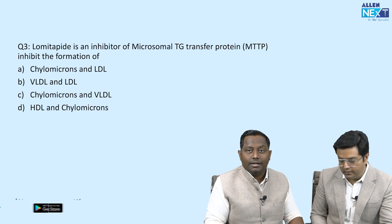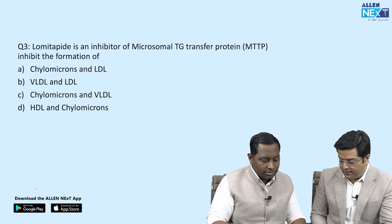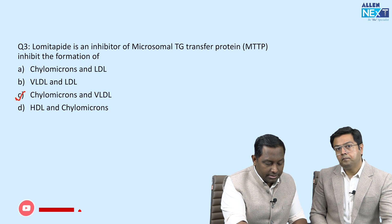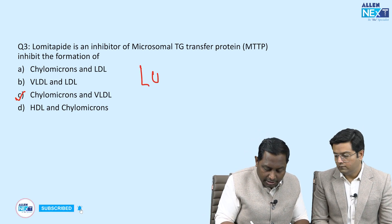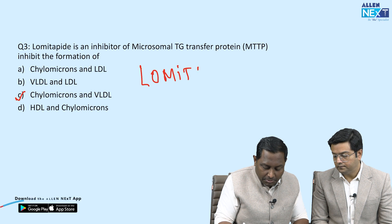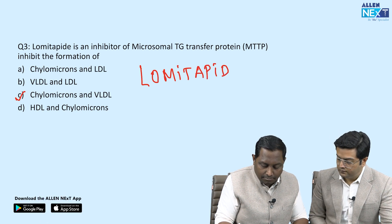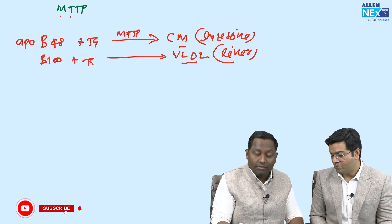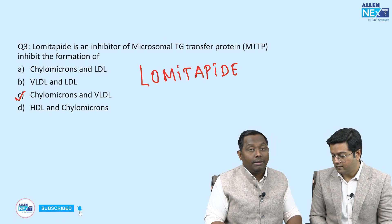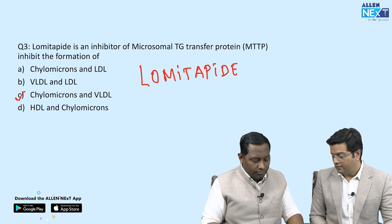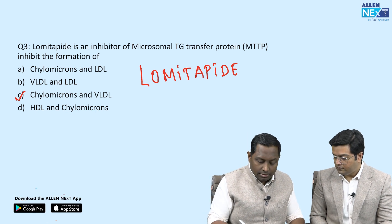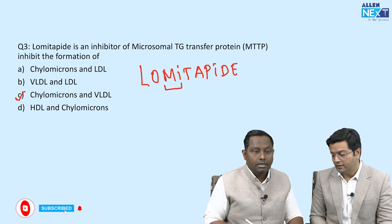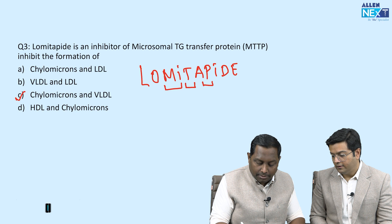The answer is directly from the discussion: MTTP inhibition reduces both chylomicrons and VLDL. The drug is lomitapide — you can remember this easily by looking at the name, which relates to microsomal TG transfer protein. So lomitapide as an MTTP inhibitor will reduce VLDL and chylomicron levels, making it a microsomal triglyceride transfer protein inhibitor.